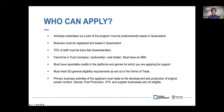You'll need to have reportable credits in the platforms or genres for which you're applying for support, and you'll need to meet the Screen Queensland general eligibility requirements as set out in their terms of trade, available on the Screen Queensland website. The primary business activity of the applicant needs to relate to the development and production of original screen content. Games companies, post-production companies, VFX or supplier businesses which support the screen industry aren't eligible if their primary activity isn't around development and production of original screen content.